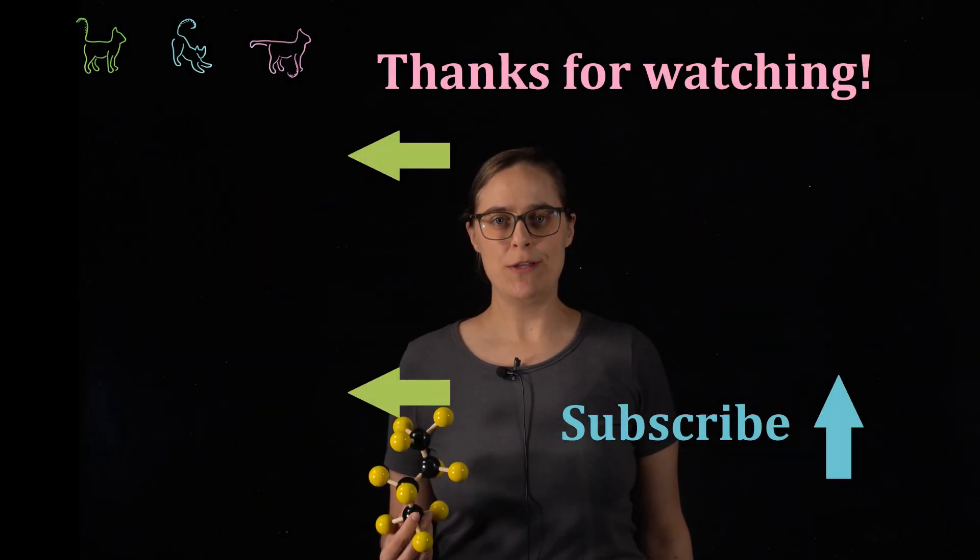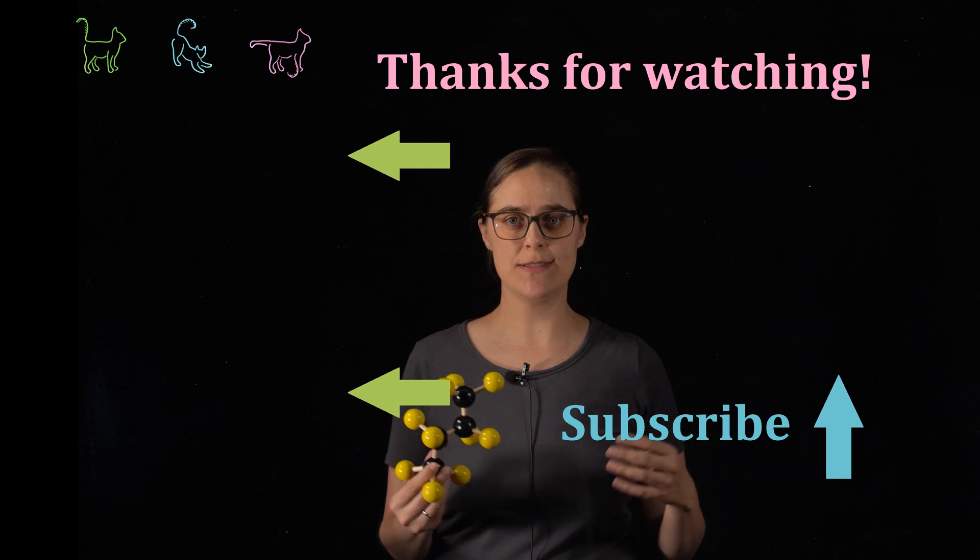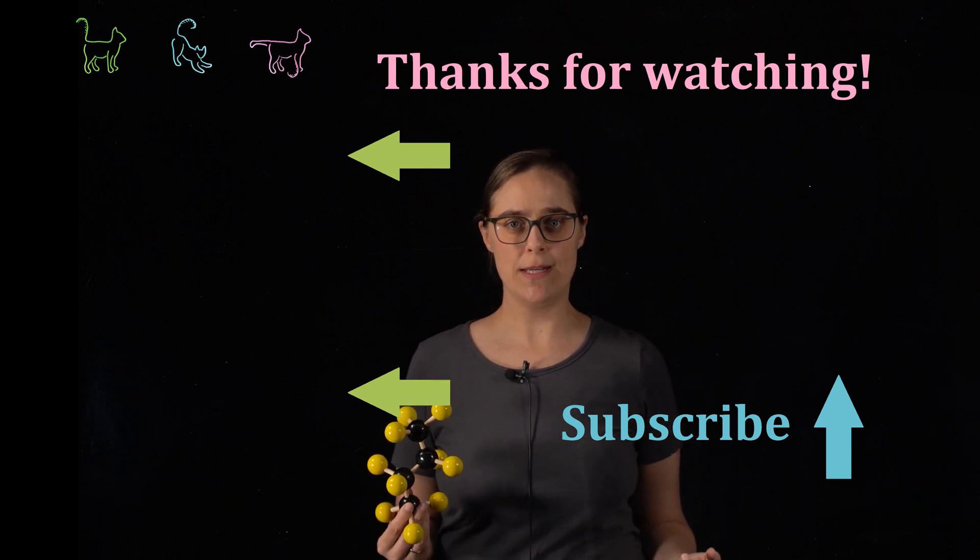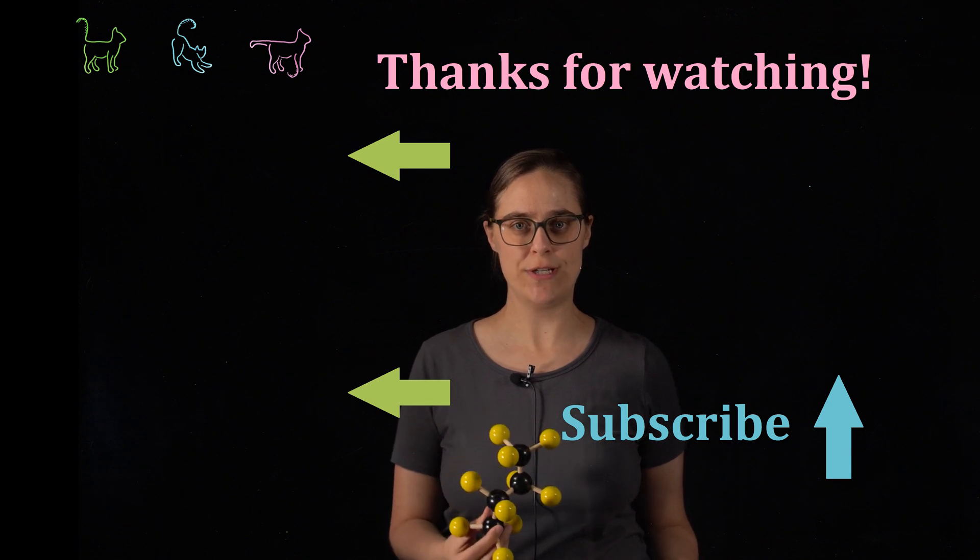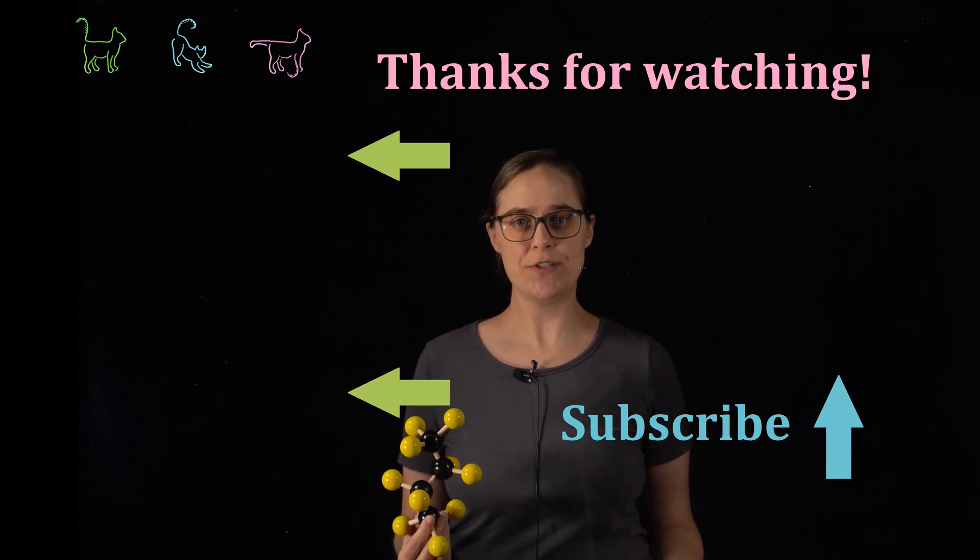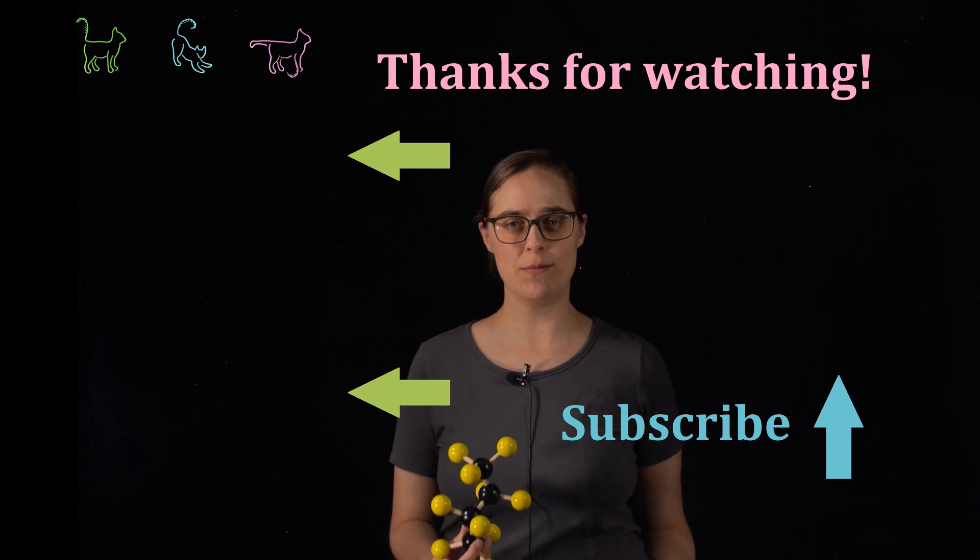In my next video, I'm going to be drawing Newman projections for butane. This is an alkane with four carbons because I want to use a more complicated molecule to start introducing terminology like anti, gauche, and dihedral angle. Thanks for watching Chemistry in a Nutshell. If you feel that I've earned it, please like this video and subscribe to my channel.